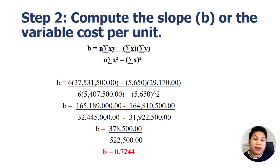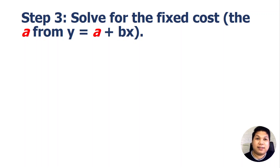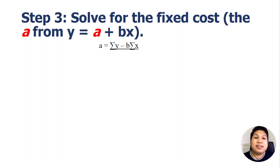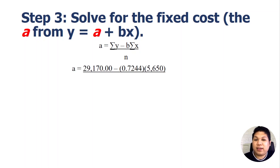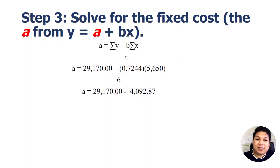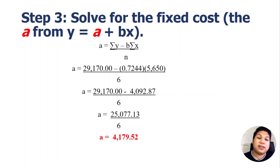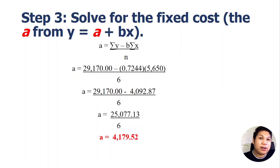Step three is to solve for the fixed cost, a, from y equals a plus bx. The formula is: a equals the summation of y minus b times the summation of x, all over n. Substituting: 29,170 minus 0.724 times 5,650, over 6. Simplifying gives 25,077.13 divided by 6, so our fixed cost a equals 4,179.52. This is actually somewhat higher compared to the other two methods, but among the three, regression analysis is the most accurate.